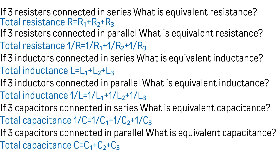You can observe that the relationship between resistors and capacitors are quite opposite. In case of resistors connected in series, R equals R1 plus R2 plus R3. In case of capacitors connected in series, 1/C equals 1/C1 plus 1/C2 plus 1/C3. If three capacitors are connected in parallel, C equals C1 plus C2 plus C3.